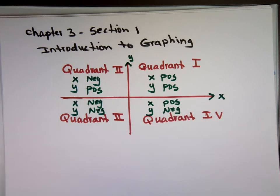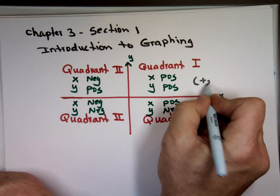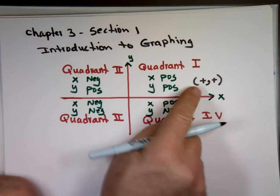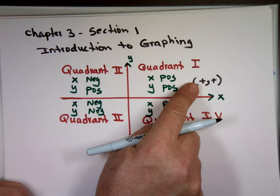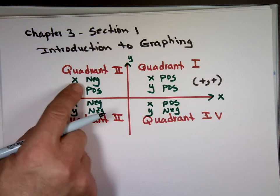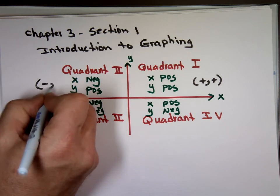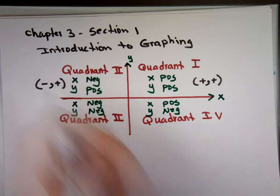So a lot of times in math books, they write that like this. Positive, positive. Just like a point, x is always the first, y is always the second. x is positive, y is positive. Here, x is negative, y is positive. This will be written like this: minus, plus. x is negative, y is positive.